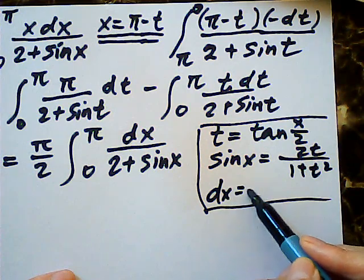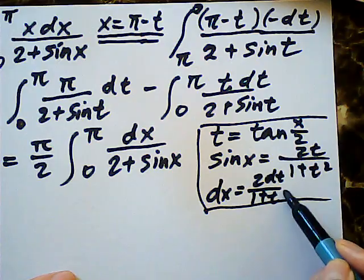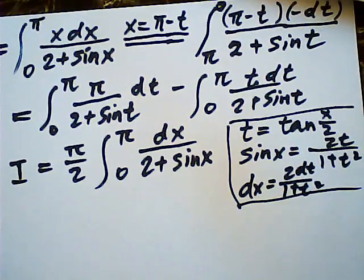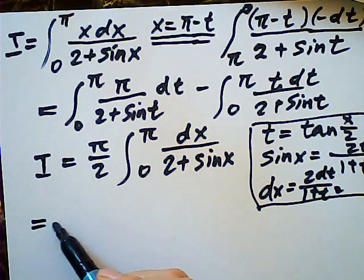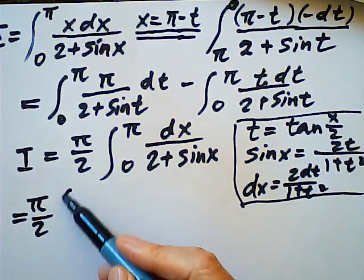dx is equal to, you must be familiar with this, two dt over one plus t square. This method that you must have done. And then this is equal to pi over two integral.